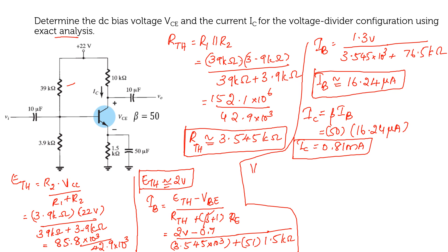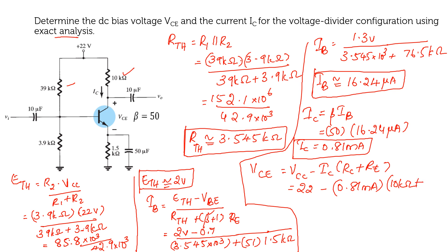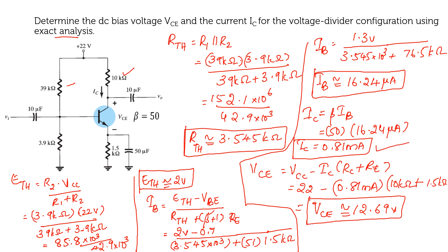Now find Vc using the formula Vc equals Vcc minus Ic times (Rc plus Re). Substituting: 22 V minus 0.81 mA times (10 kΩ plus 1.5 kΩ). Solving gives Vc approximately equal to 12.69 V. So Ic equals 0.81 mA and Vc equals 12.69 V. Comparing with the previous problem, when beta is decreased from 100 to 50, there is a slight decrease in the ICQ and Vc values.